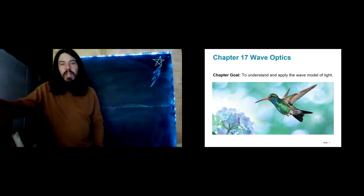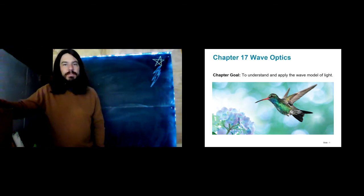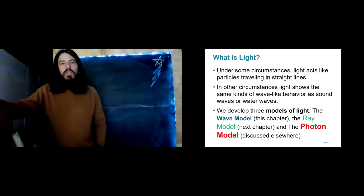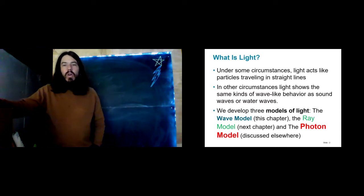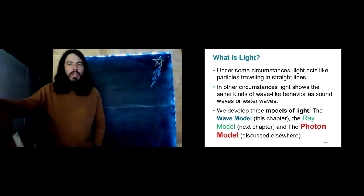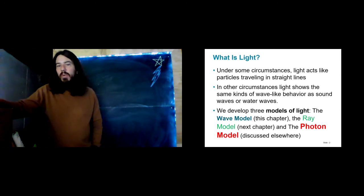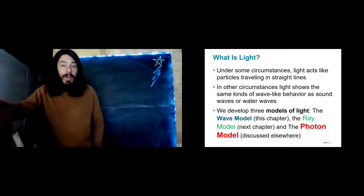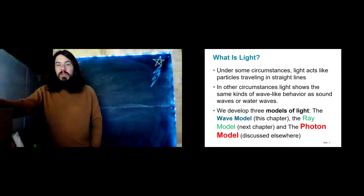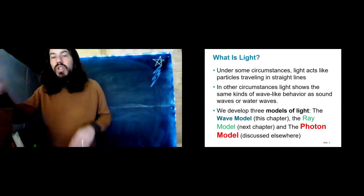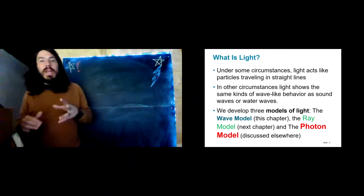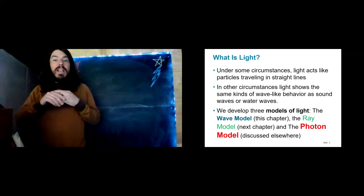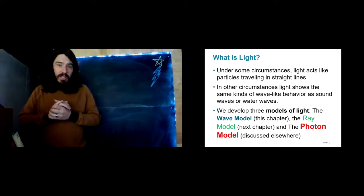That's just an example of diffraction, which is what we're going to be diving into here. We've been talking about different models of light. Under some circumstances, light acts like particles — a light particle is called a photon and contains a discrete amount of energy. In other circumstances, light shows the same kinds of wave-like behavior as sound waves or water waves. That's really what we're going to be digging into here today.